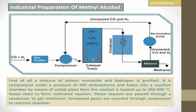This is the catalyst tower. Right after compression, these gases pass through the catalyst tower. The catalyst tower is filled with zinc oxide or chromium oxide as catalysts, and the temperature of this tower is 450 degrees centigrade. This is the spiral pipe.